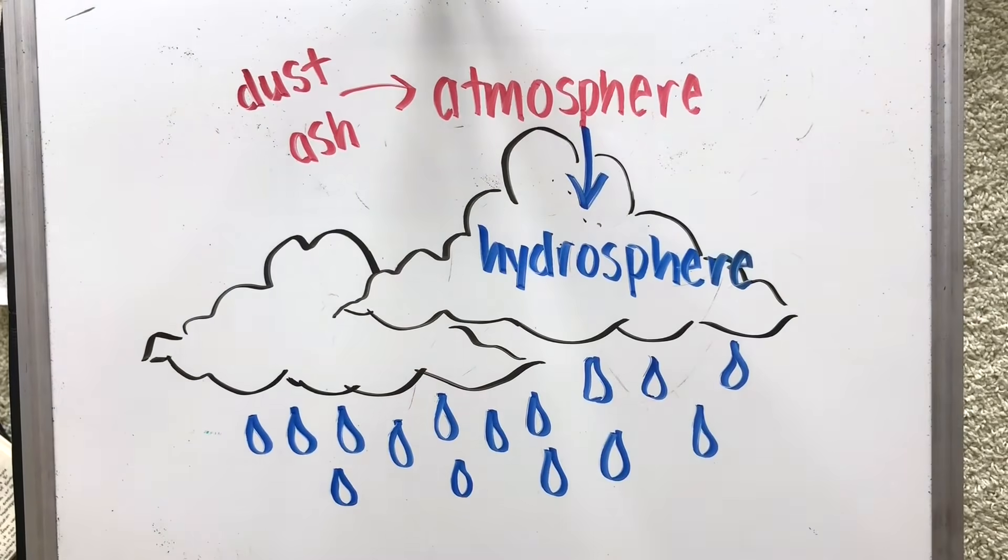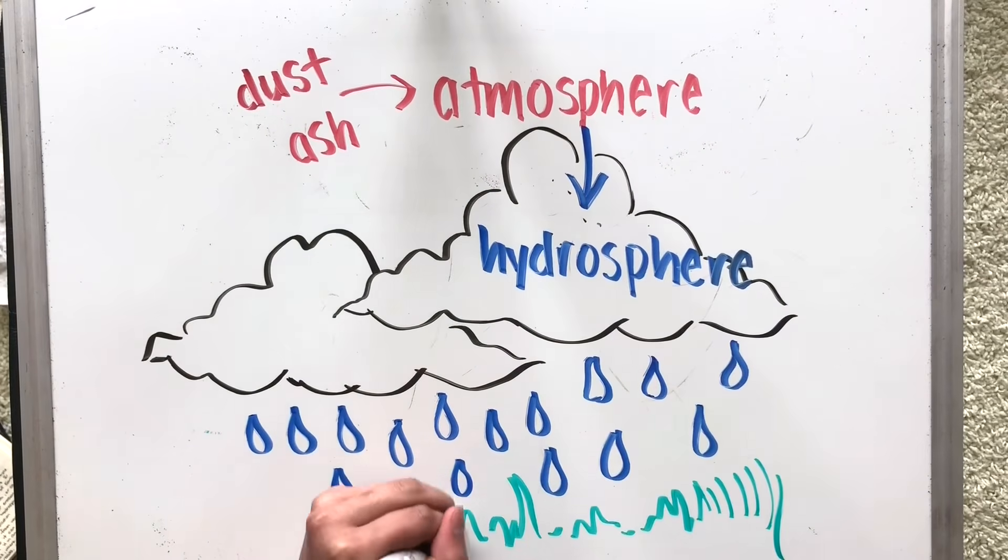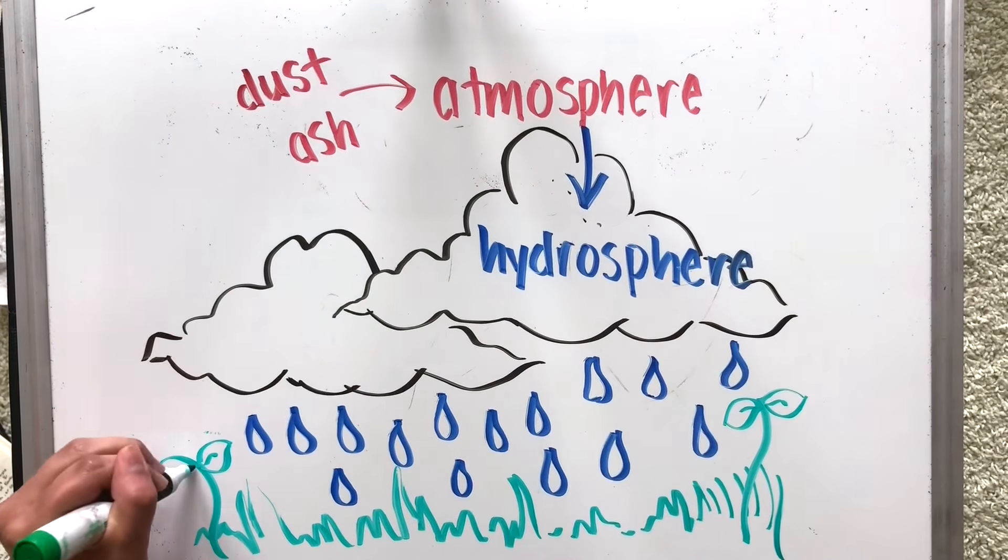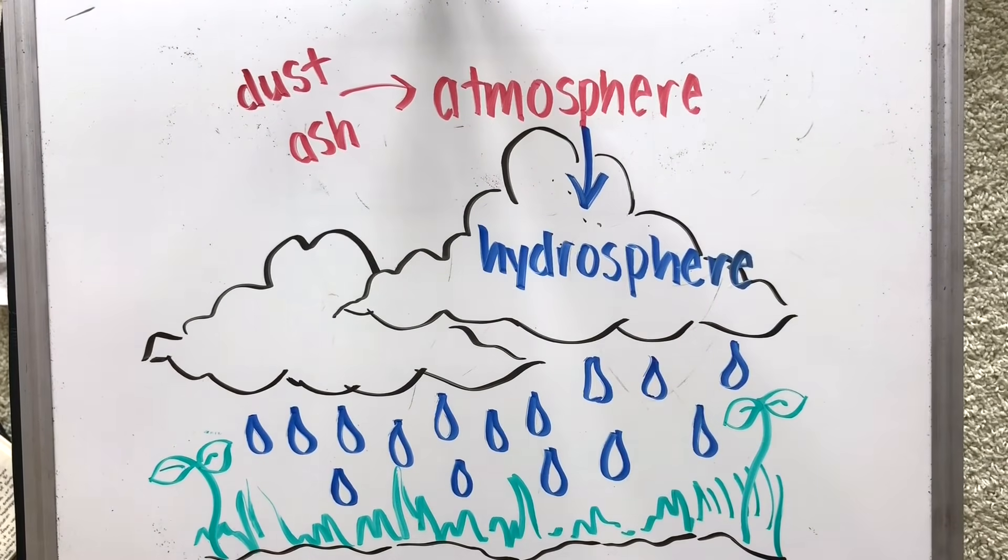This falls back down to the earth as precipitation, helping to support animals and help plant growth. This marks an interaction between the hydrosphere and the biosphere.